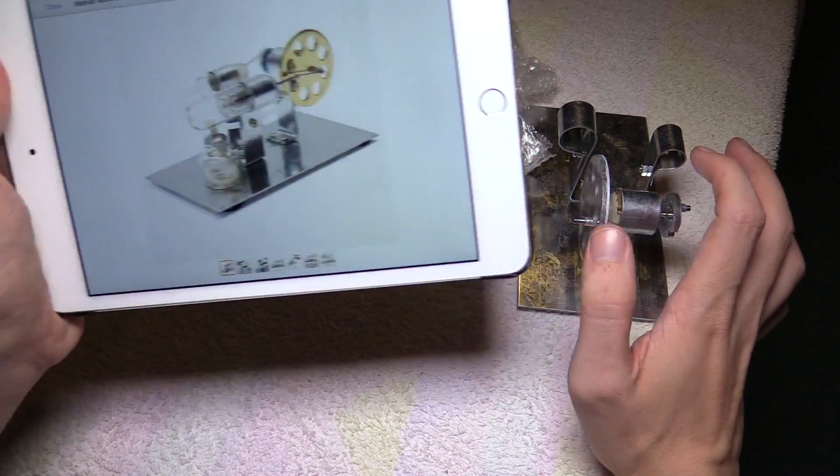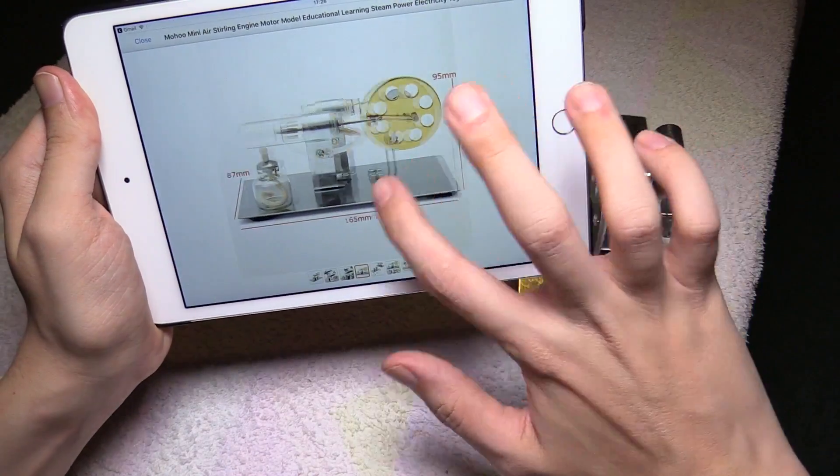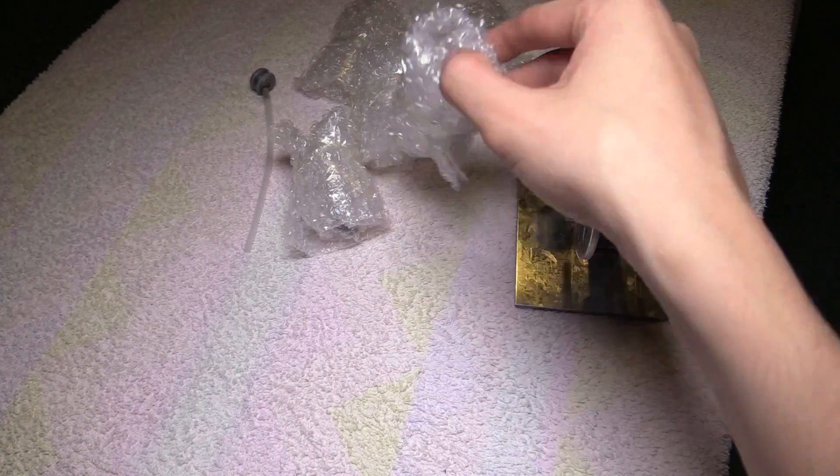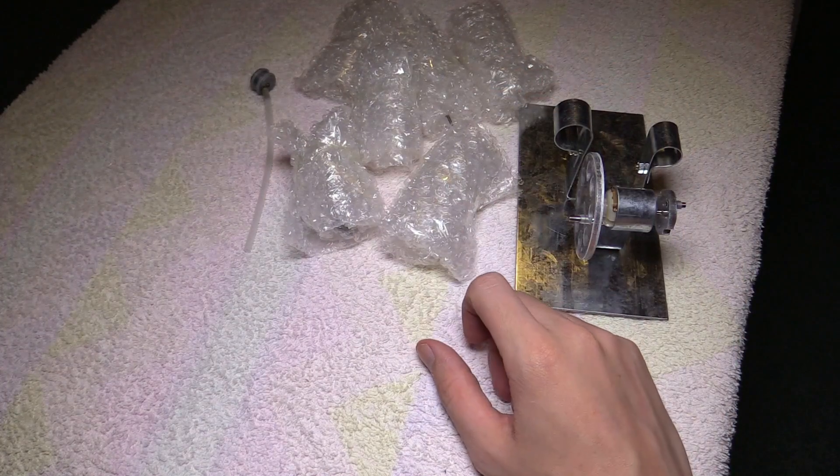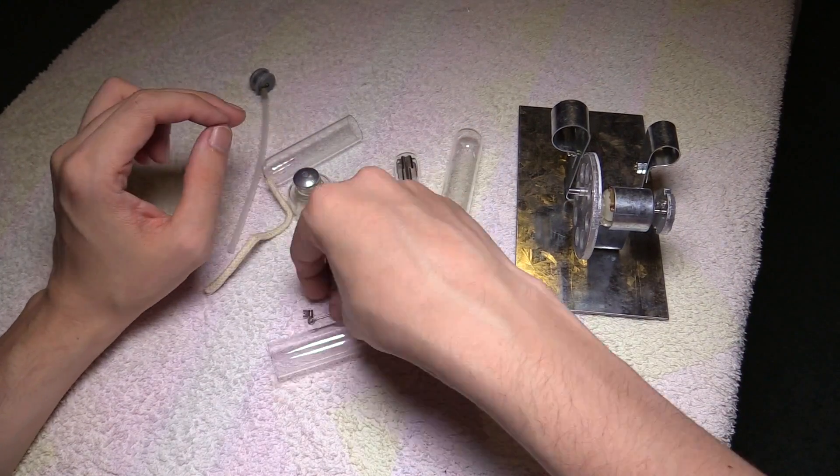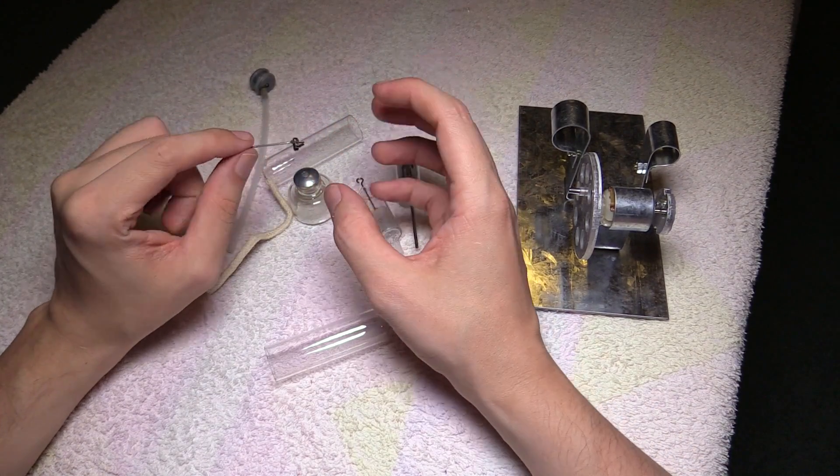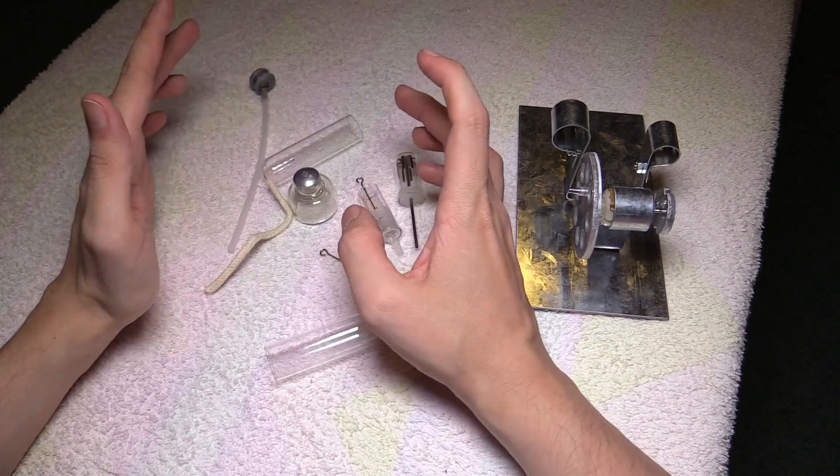Now it doesn't come with instructions, so we're basically just going to have to look at the pictures and try to work it out for ourselves. The first thing I'm going to do is take all the parts out of their bags so we can see what we've got to work with. Some of them are quite small, like this part for example, so I'd recommend being very careful with the bags. Don't throw them away straight away just in case you leave a part somewhere.